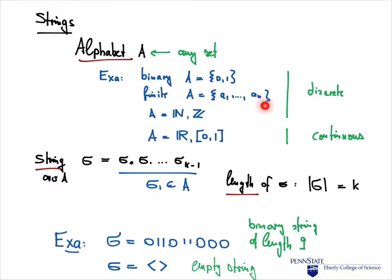We can also have infinite alphabets, like the natural numbers or the integers. One could also consider continuous alphabets — the discrete ones include natural and integer alphabets, while continuous alphabets could be the real numbers or the closed unit interval.